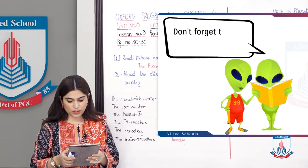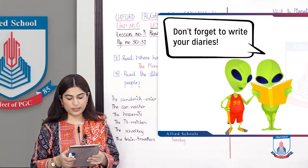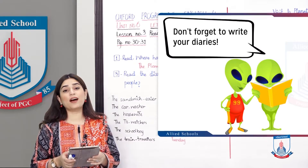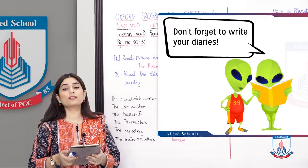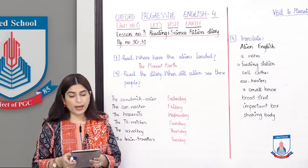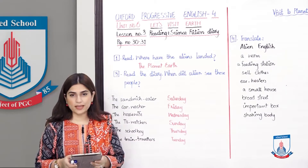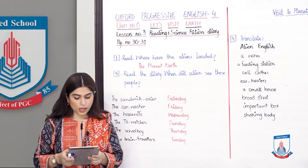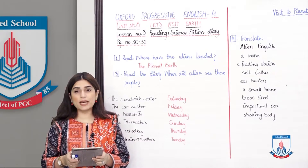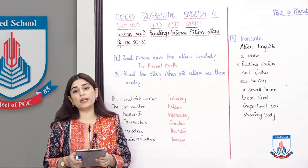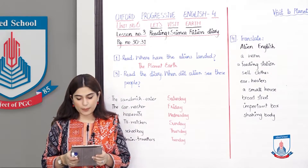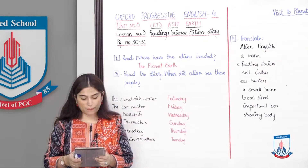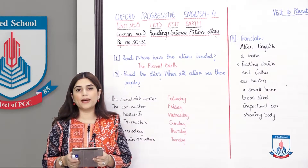Third picture: 'Don't forget to write your diaries.' What are they doing? The two aliens are writing in their diaries. Now go to the second exercise — look at the pictures and say what is happening. You will read the dialogues in your books and see what is happening.